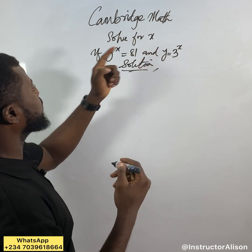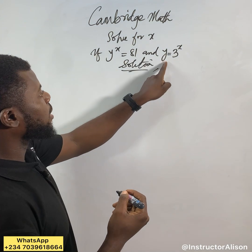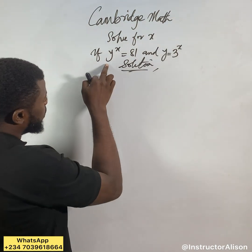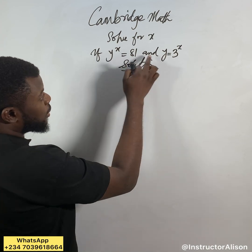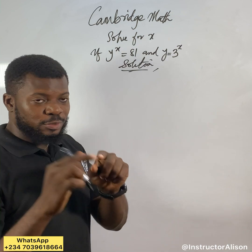If y to the power of x is equal to 81 and y is equal to 3 to the power of x. It is very simple. Let's say y^x equals 81. They're going to say y equals 3 to the power of x. First thing I'm going to do: